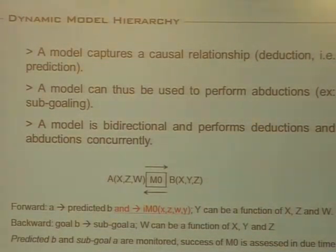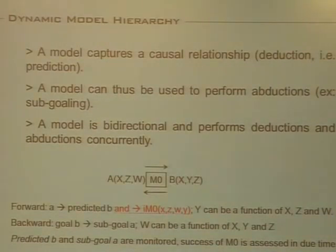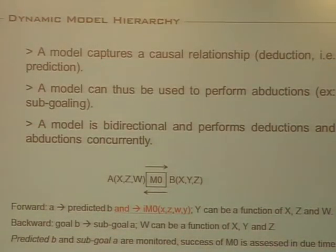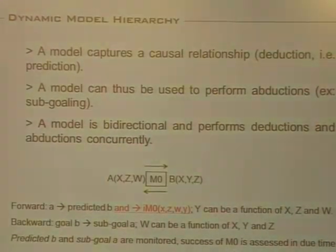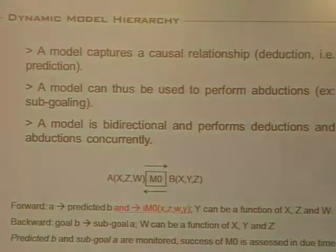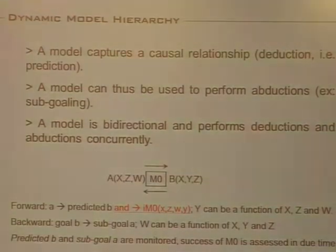This is of extreme importance because we are targeting the construction of control systems. We cannot produce goals if we don't have predictions of the state of the thing that has to become controlled, because if we did that, we would always lag behind the plant. So we must be able to sub-goal while keeping in mind the ongoing flow of predictions. And symmetrically, while we produce predictions, we must be aware of our goals in order to meet them — and not to run after a ball that is coming right in your face when you just have to wait.